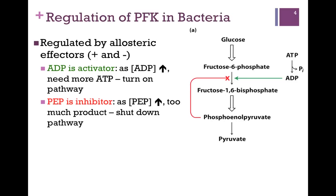First, let's look at the regulation of PFK, or phosphofructokinase, in bacteria. We looked at this in Chapter 7 as an example of allosteric regulation. There are both positive and negative allosteric effectors. ADP is an activator — here we have our traffic signal colors. As ADP concentration increases, it binds to PFK and elevates its activity. ADP is a measure of the energy need of the cell: if ADP concentration is high, then ATP concentration must be low and we need more energy. This is the main benefit of the glycolytic pathway — we produce more ATP — so it makes sense that ADP would be an activator.